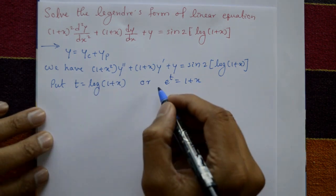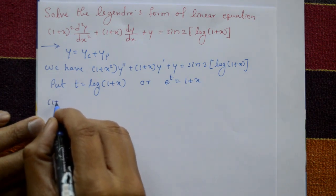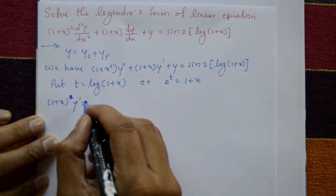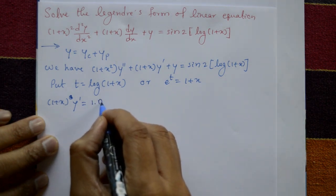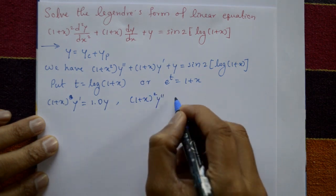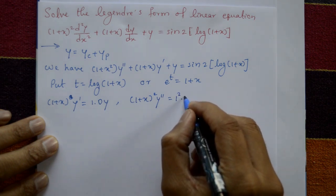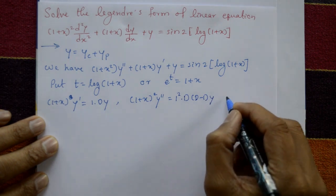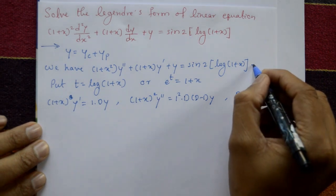Now assume the results of the Legendre equation. First, (1 + x) y' = a · dy, where a = 1, so (1 + x) y' = Dy. Next, (1 + x)² y'' = a² · D(D − 1)y, where a = 1, so (1 + x)² y'' = D(D − 1)y. Here D stands for d/dt, the differential operator. This is equation number 1.